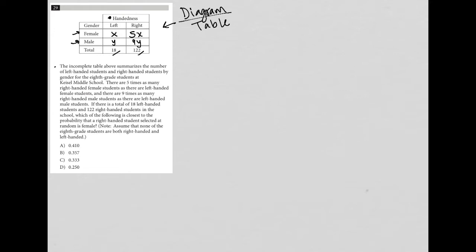If there is a total of 18 left handed students, so we see that in the total row there, and 122 right handed students, which we also see here in the school, which of the following is closest to the probability?